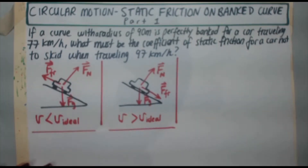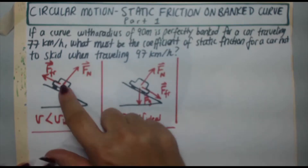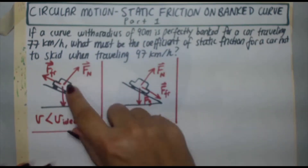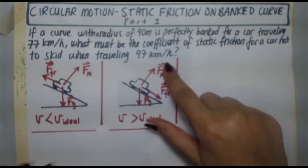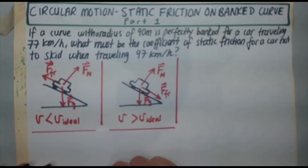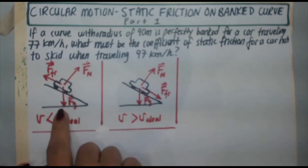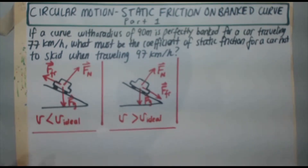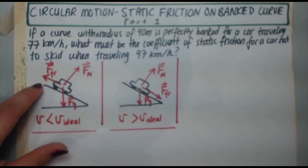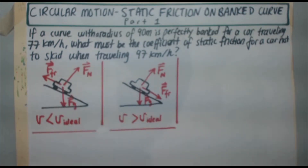The car is on a surface. You've got your normal force perpendicular to the surface, the force of gravity going straight down towards the center of the earth, but you've got friction pointing in two different directions. So how do you know when you should pick a certain direction?